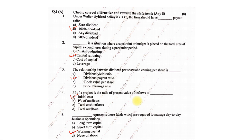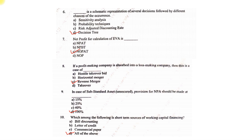These are the first five MCQs — you can read through and take a screenshot. The next five: dash is a schematic representation of several decisions followed by different chances of occurrence — the answer is decision tree. Next: net profit for calculation of EVA is NOPAT. If a profit-making company is absorbed into a loss-making company, this is called a reverse merger. In case of a substandard asset which is unsecured, the provision of NPA should be made at 100%. Among the short-term sources of working capital finance, the answer was all of the above.